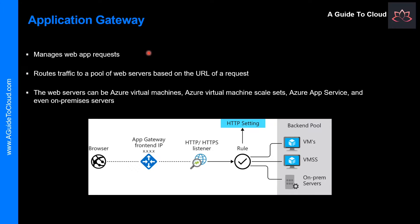Application Gateway manages the requests that client applications can send to a web app. An Application Gateway routes the traffic to a pool of web servers based on the URL of a request. This is known as Application Layer Routing.